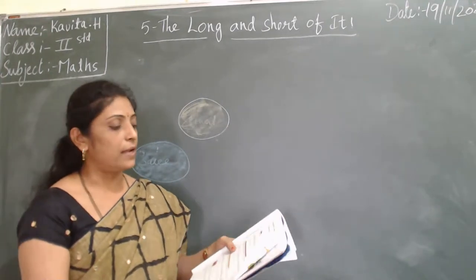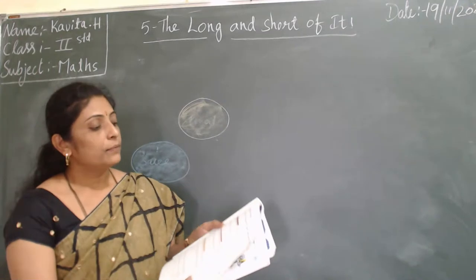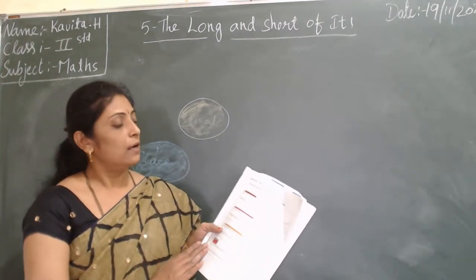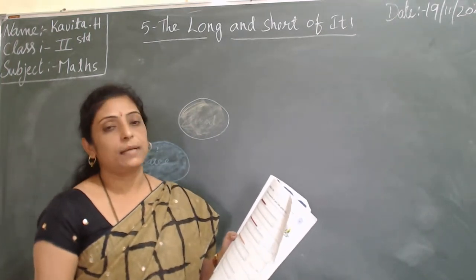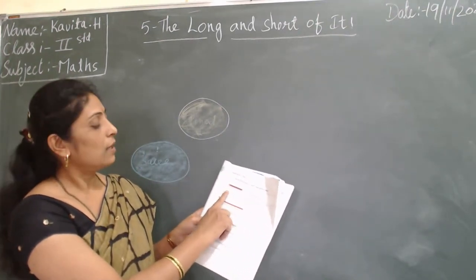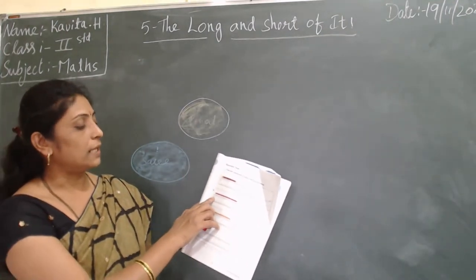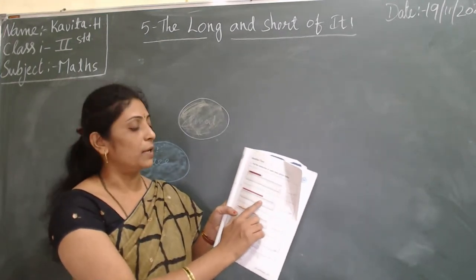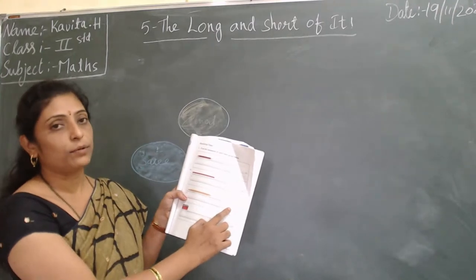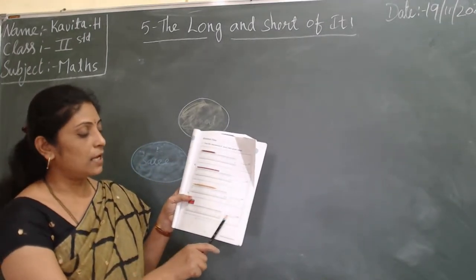Go to next page, page number 55. This is question time — home fun for you to complete at home. Find the measures of each item given below. First is pencil — it is 7 centimeters. Write 7. Next, new pencil is 10 centimeters. Write 10. Next item is 11 centimeters — write 11. Next, sharpener is 3 centimeters — write 3.